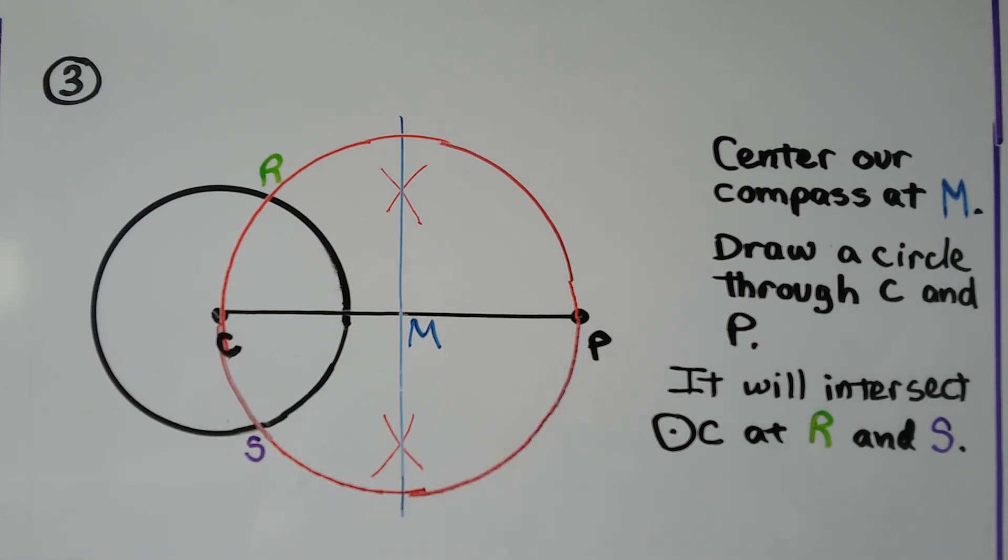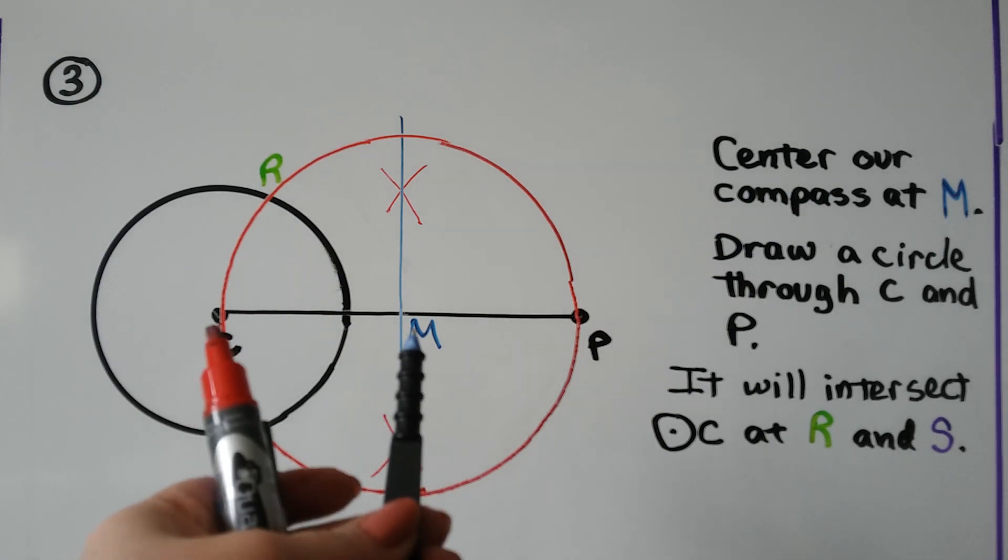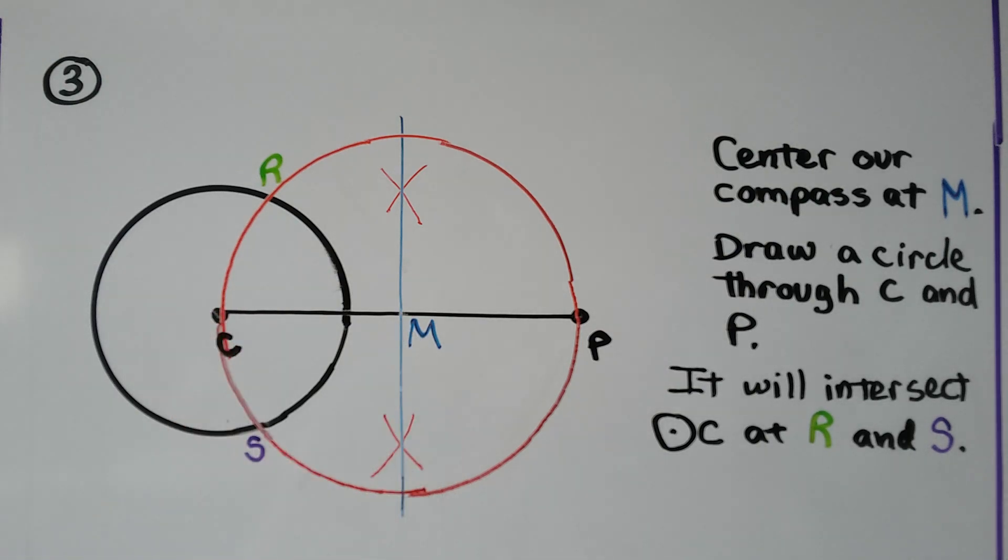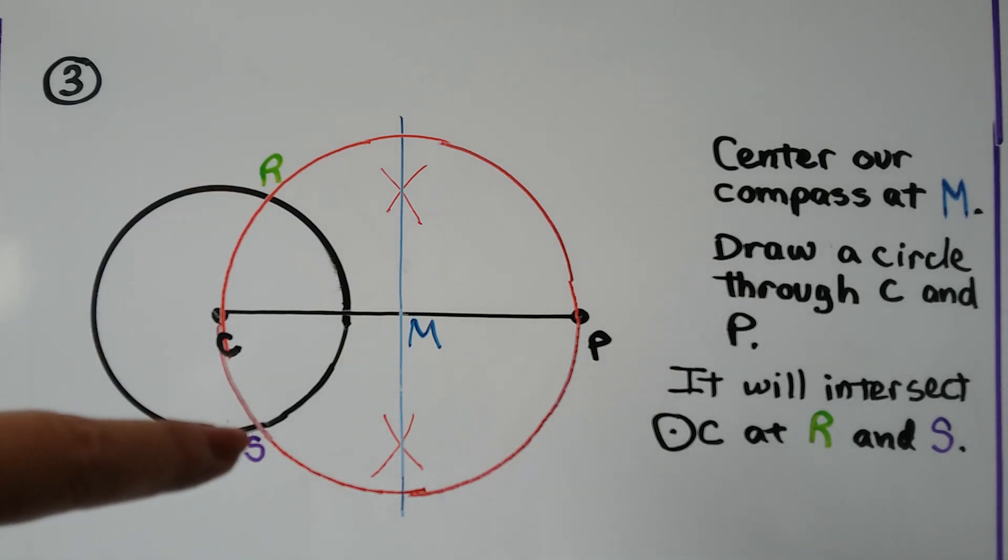Because we had our compass setting that distance, didn't we? Like that. And it will intersect circle C at R and S.